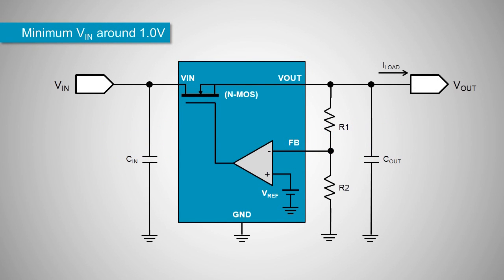LDOs with N-channel MOSFET pass elements need to provide a gate drive which is higher than the output voltage. In order to make it possible to use very low input and output voltages, many N-MOSFET LDOs have a gate drive circuit that is supplied by an internal charge pump or a higher external bias voltage. This makes it possible to use these LDOs with very low input voltages down to 1 volt.